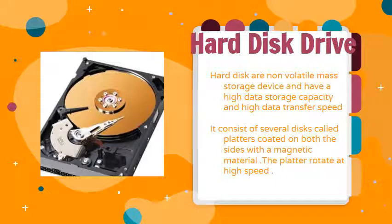Hard disk has a very large storage capacity and high data transfer speed. It is kept inside the PC box. A hard disk consists of several disks called platters, coated on both sides with a magnetic material. The platters rotate at high speed. Each disk surface is able to store data.